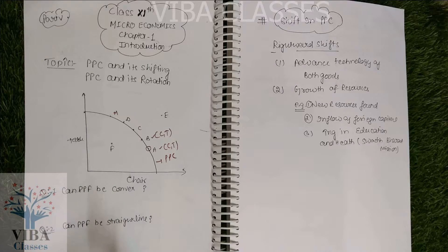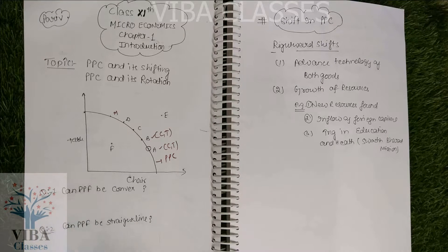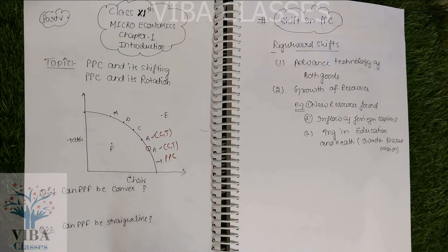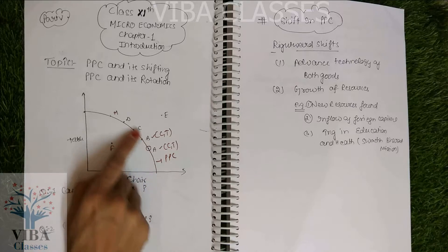On the transformation curve or on the transformation boundary, that means it is attainable because you are using exactly your resources — you are doing full utilization of your resources. Now listen carefully: any economy today, if you talk about it, does not operate on the PPC. Operating on the PPC means there is no wastage of resources. Tell me — India has abundant labor, but do we use all that labor? Is there no unemployment? No, there is unemployment.